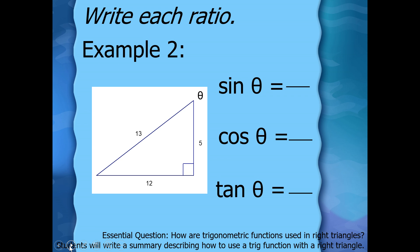Notice my reference angle changed — it's now up at the top. What's my hypotenuse? That's the easiest one to find first. Thirteen. What's my opposite? Twelve is across from the reference angle. And then by default that makes the other one the adjacent. It's always good to identify those things first. Sine is opposite over hypotenuse. What are we getting for sine? Twelve over thirteen.